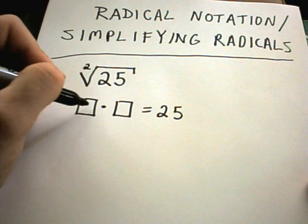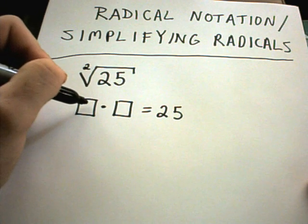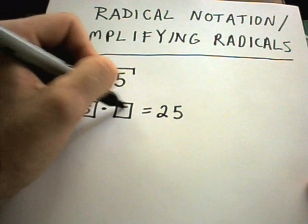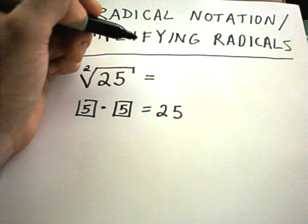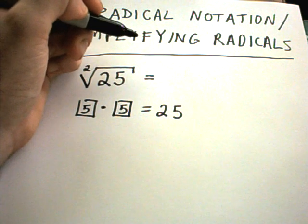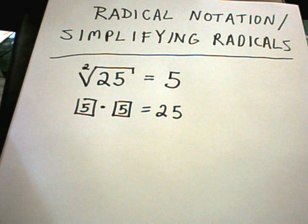Notice that 5 times 5 equals 25, and that's the solution. The square root of 25 is 5.